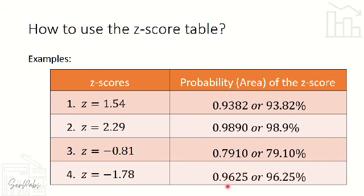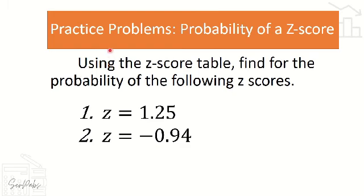That is how to use the z-score table. Now it's your turn — practice problems: using the z-score table, find the probability for the following z-scores: (1) z = 1.25 and (2) z = 0.94. Comment your answers in the comment box below. That will be all — see you in our next video lesson!